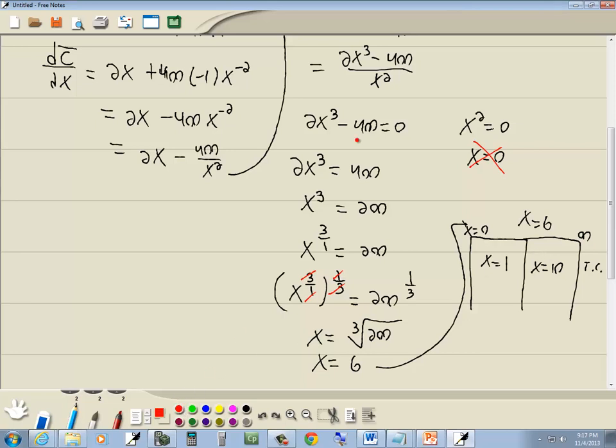Now we want to plug those into our derivative here. Now the x squared is always positive, so we don't need to worry about it. We just need to plug these values into the top part. Now if I put 1 in here, 1 to the third is 1, times 2 is 2. 2 minus 400 is negative, so this is decreasing. If I put 10 in here, 10 to the third power, 10 times 10 is 100, times another 10 is 1,000, times 2 is 2,000, minus 400 is positive, so it's increasing. So this is indeed a min.